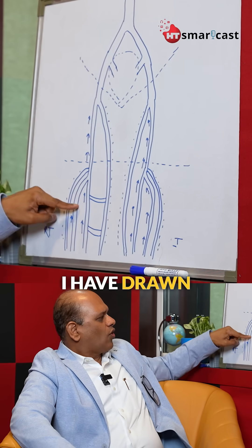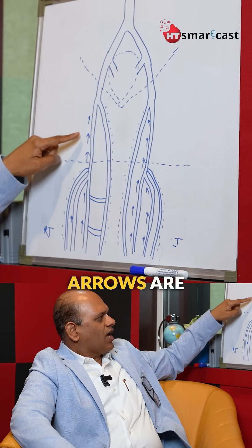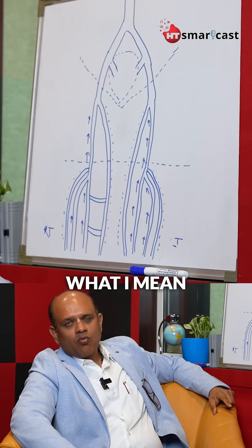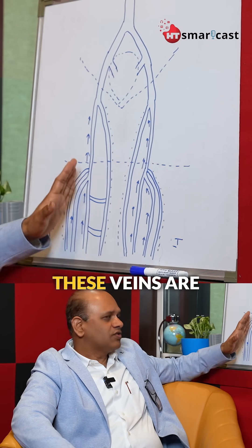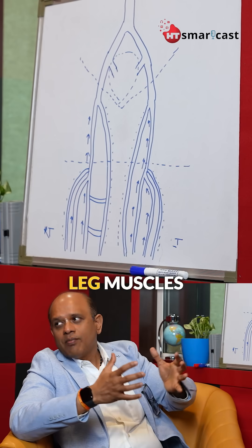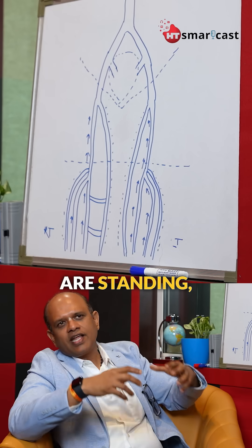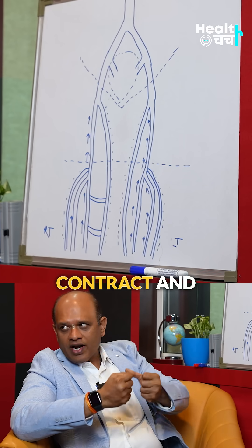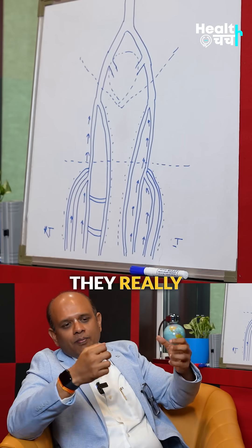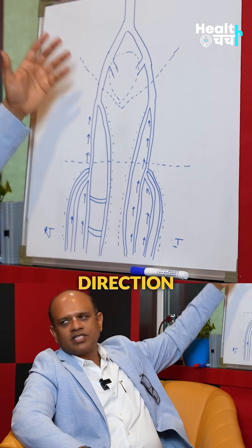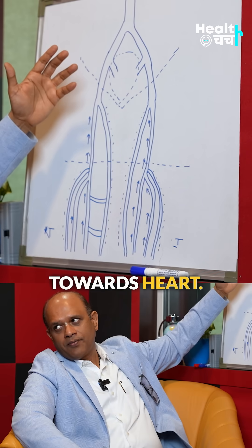The ones which I have drawn with the arrows are the deep veins. What I mean by that is these veins are deep to your leg muscles. So when you are standing, running, walking, these muscles contract and they really pump the blood and help the blood to go in a reverse direction towards the heart.